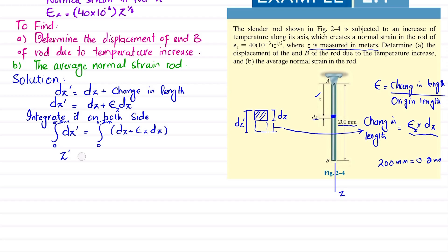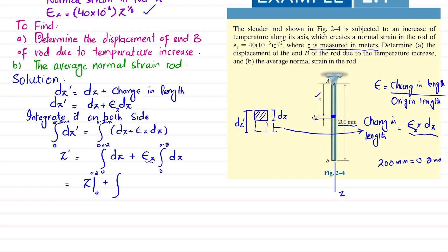Integrating the right side from 0 to 0.2 m: integral of dz from 0 to 0.2, plus integral of epsilon_z · dz from 0 to 0.2. This gives us 0.2 plus the integral of 40×10⁻³ × z^(1/2) dz from 0 to 0.2.